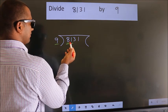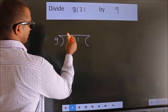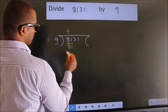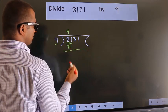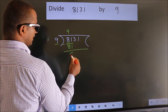When do we get 81 in the 9 table? 9 times 9 is 81. Now, we should subtract. We get 0.